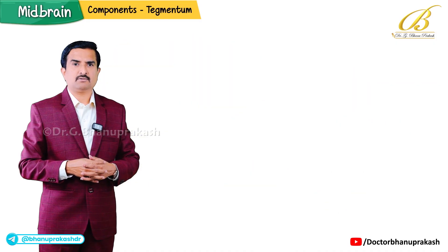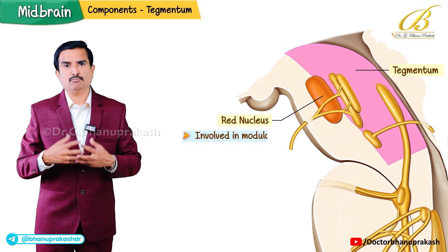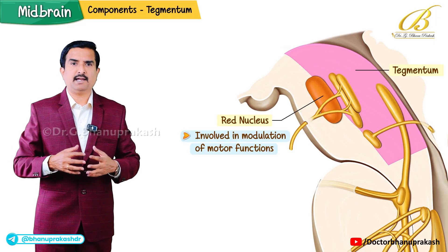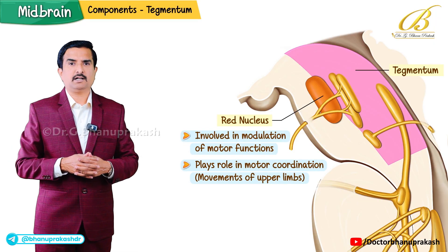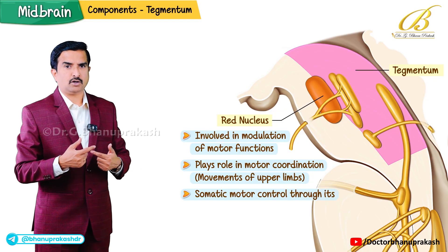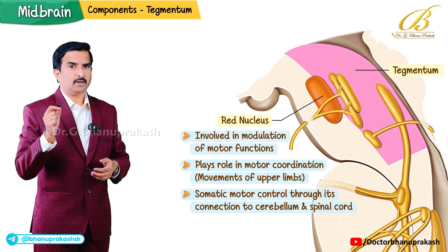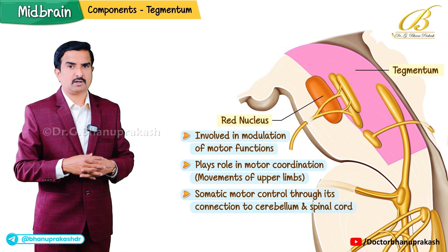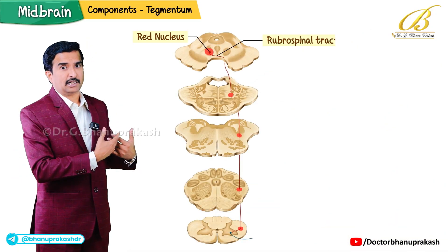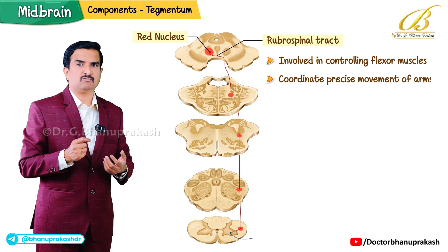The red nucleus is another important structure involved in modulation of motor function. Located in the tegmentum of the midbrain, it plays a role in motor coordination, particularly for movements of the upper limbs. It is involved in somatic motor control through its connections to the cerebellum and the spinal cord, helping to refine motor movements for gross motor tasks like arm and hand movements. It is also part of the rubrospinal tract, which is involved in controlling flexor muscles and coordinating precise movement of the arms.